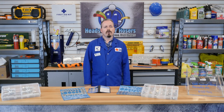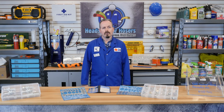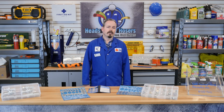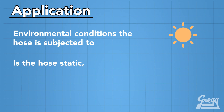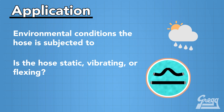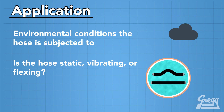Is there flexing required of the hose? Therefore you need to know the bend radius, which will be covered later in our segment. Also consider the movement of the hose — is it static, meaning it doesn't move very much? Is there vibration? Or is there major flexing of the hose?